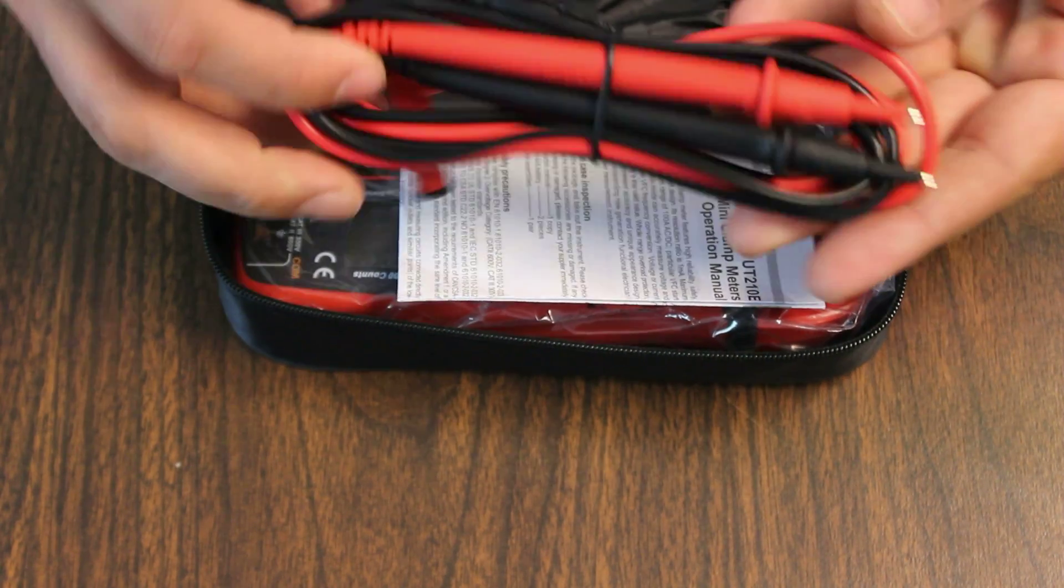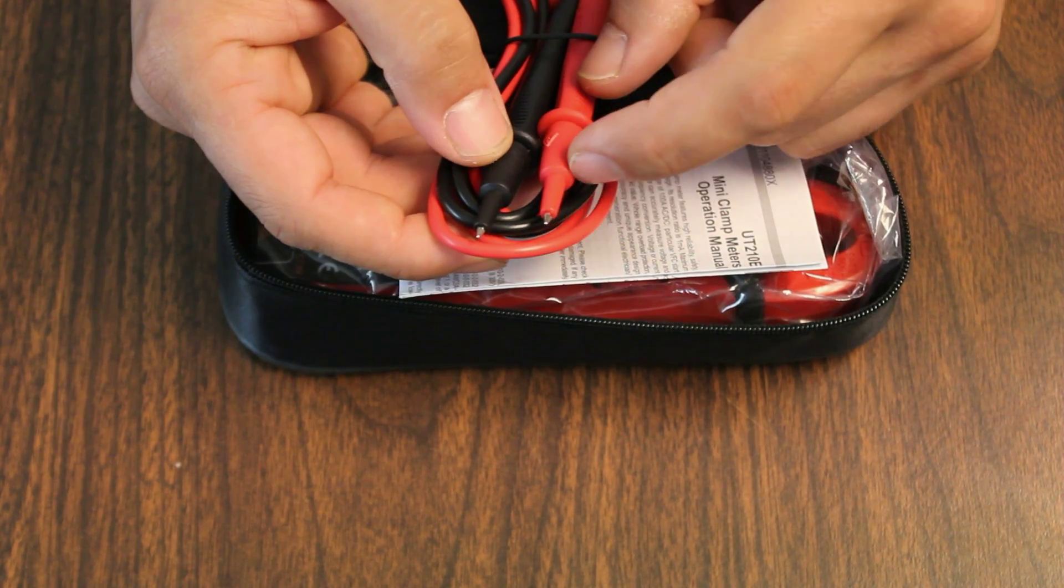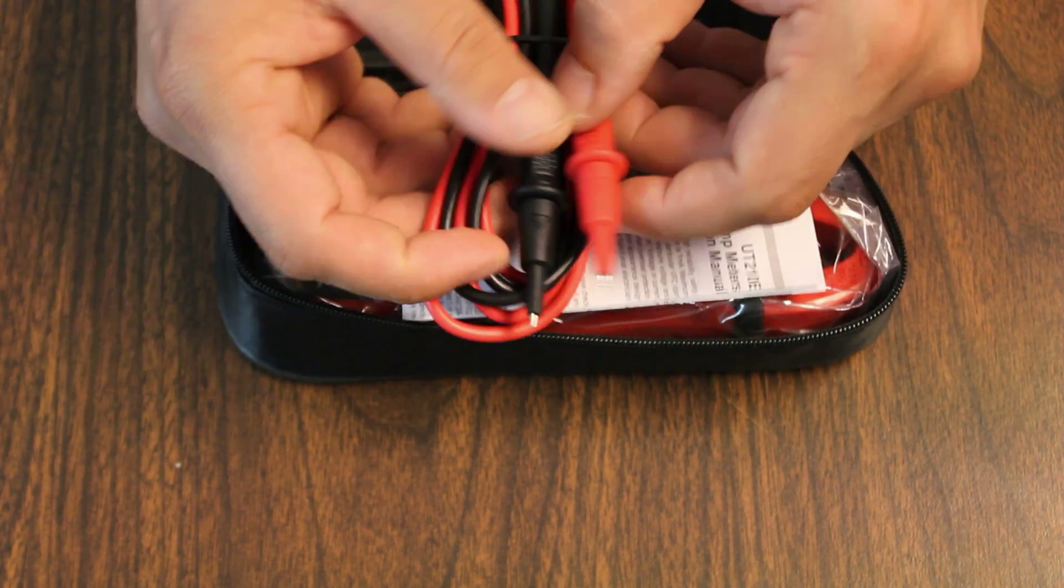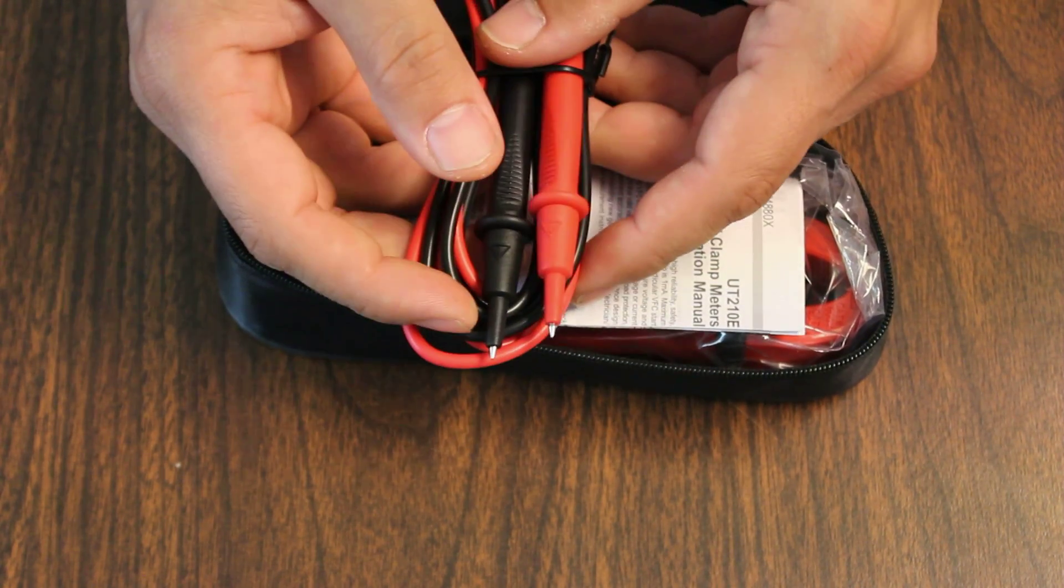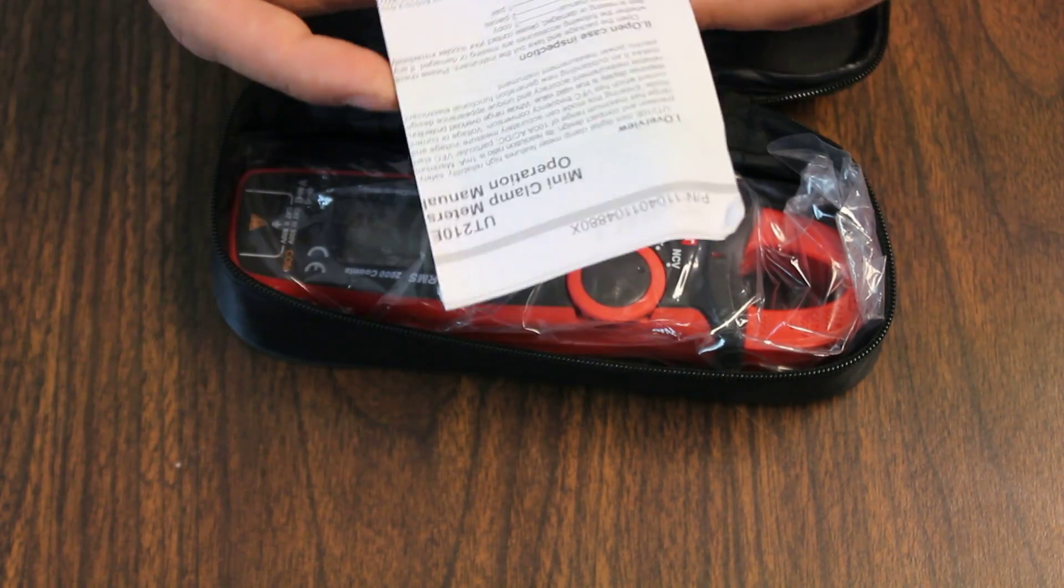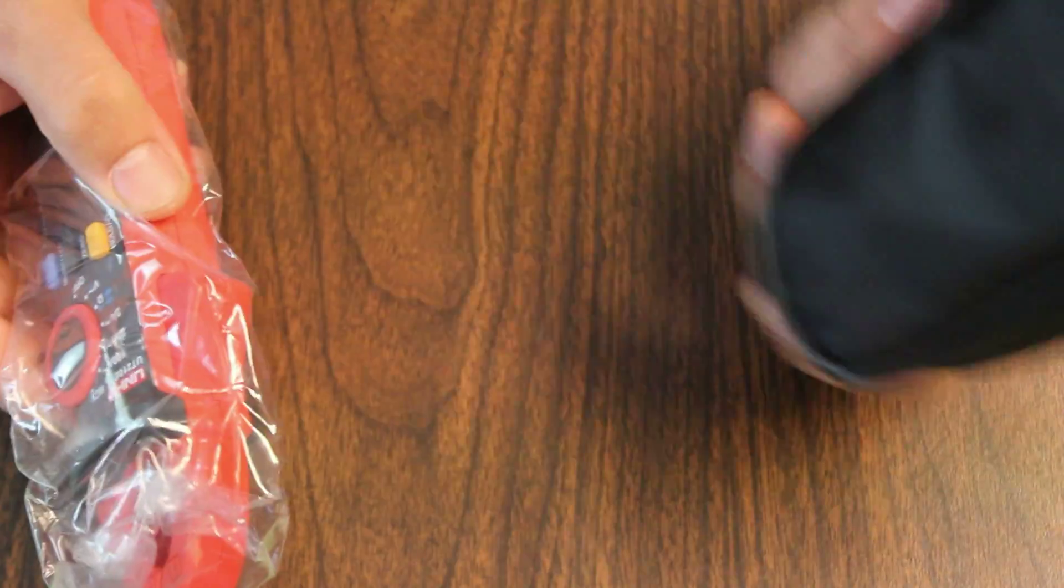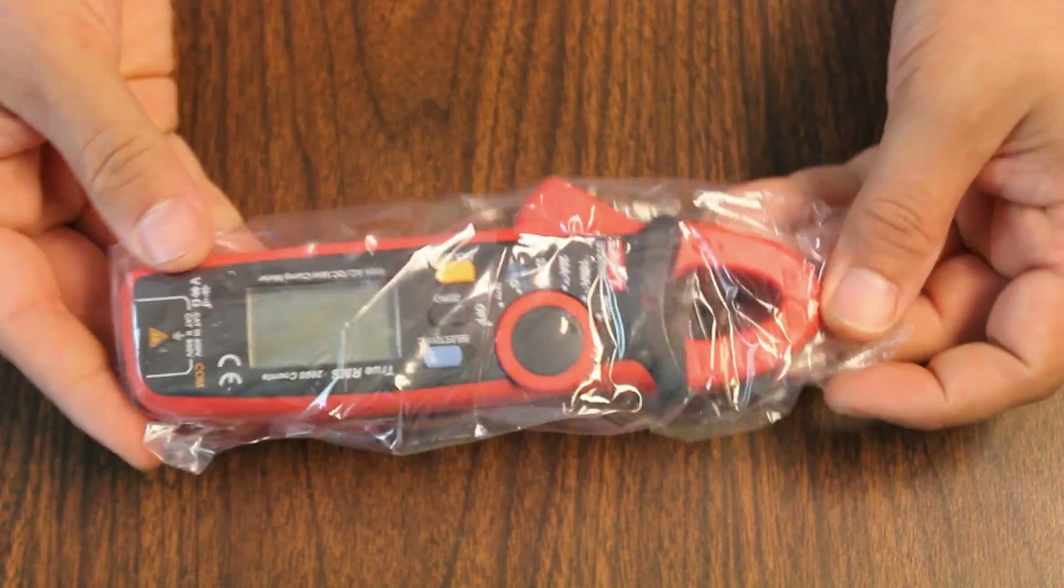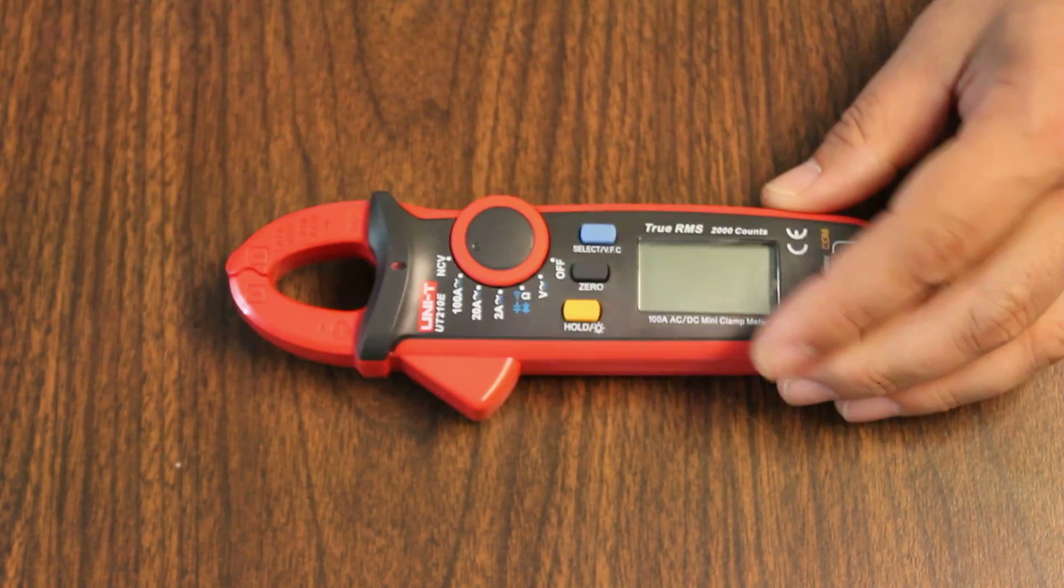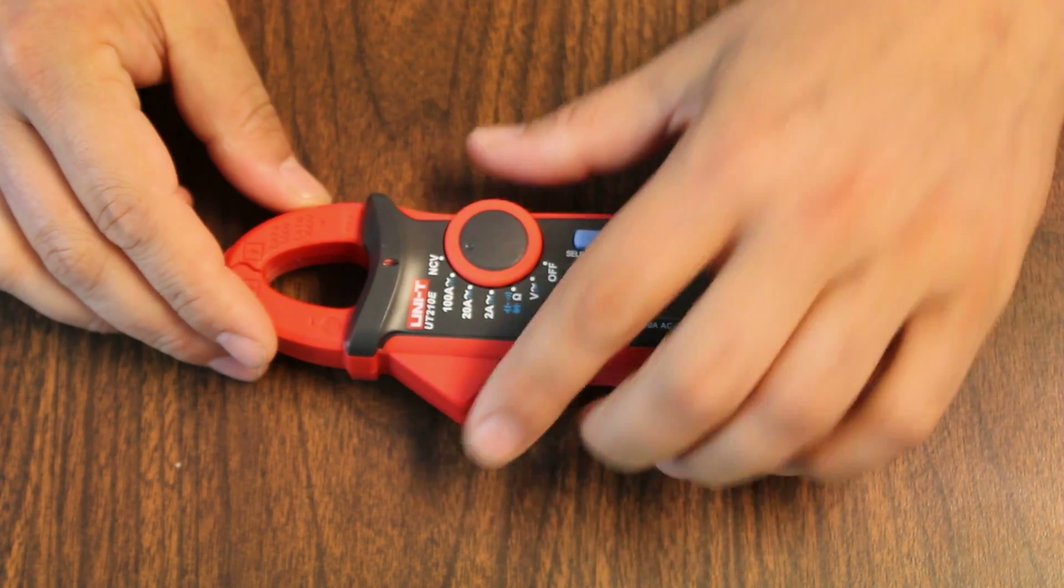So it comes with some probes. Fine. They look like decent probes. They have insulated tips all the way up to the tip. That's kind of nice. There's less chance when you're doing a measurement that you're actually going to cross the tips and maybe potentially short something out. Some instructions. Fine. And here is the meter and a little case as well. One of the things this meter is supposed to have going for it is, it's very compact and easy to toss in a bag or anything like that and take with you.